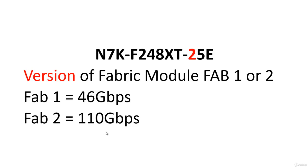One fabric module provides bandwidth to each line card. For example, one Fab1 module provides 46 Gbps per line card. So on a 7018 chassis with 16 modules, it provides 46 Gbps to each. If your line card is capable of 550 Gbps, you need five Fab2 modules, because 110 Gbps multiplied by five equals 550 Gbps.